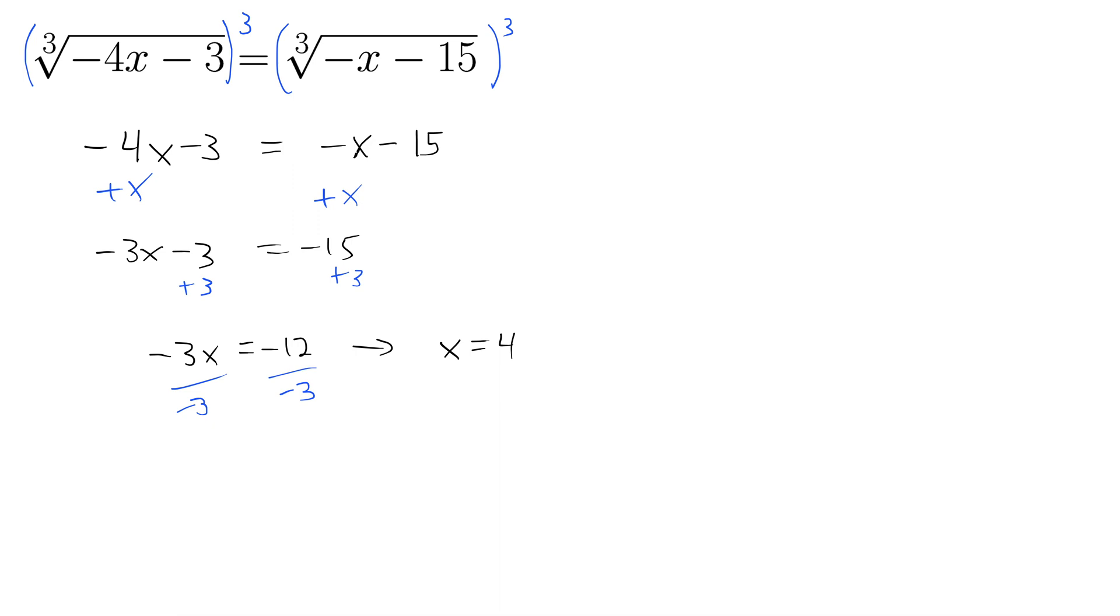Since this is not a square root, we don't have to check to make sure that the 4 doesn't give us a negative inside the radical. Right, if this was a square root, we'd have to check the solution to make sure we don't get a negative inside the radical.